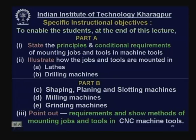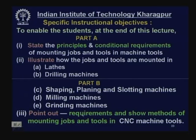The overall specific instructional objectives for the total content of the lecture — part A and part B — are: first, to state the principles and conditional requirements of mounting jobs and tools in machine tools; second, to illustrate in detail how jobs and cutting tools are mounted in different types of general purpose machine tools like lathes, drilling machines, shaping, planing, slotting machines, milling machines, and grinding machines; and third, to point out requirements and show methods of mounting in CNC machine tools, which are very precision, flexibly automatic, and the machine tools of the present and future. Special care should be taken about mounting tool and job in CNC machine tools.